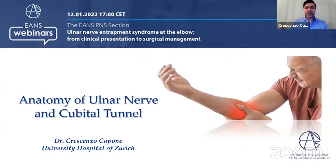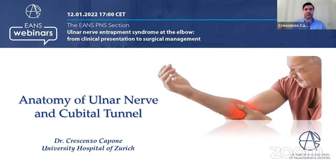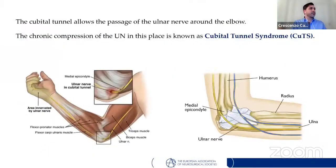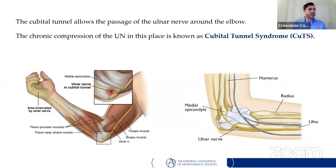Thank you very much. Good afternoon everyone. Thank you for organizing this webinar. I will open by describing the anatomy of the cubital tunnel and consequently the ulnar nerve. The cubital tunnel is a space of the dorsal medial elbow which allows passage of the ulnar nerve around the elbow. Chronic compression there is called cubital tunnel syndrome — basically a form of repetitive strain injury, similar to carpal tunnel syndrome at the wrist.